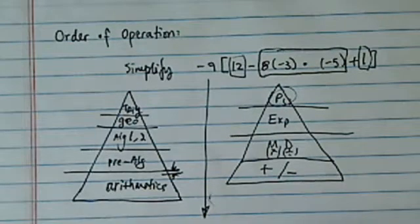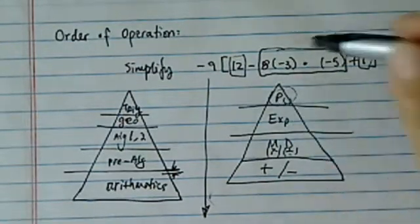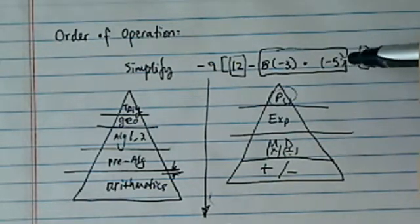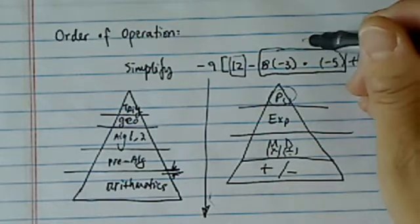We have a 12, minus, we're going to take care of this one. If you multiply this whole thing together, minus 5 times 8 is 40, times 3 is 120.